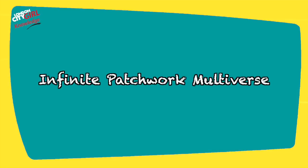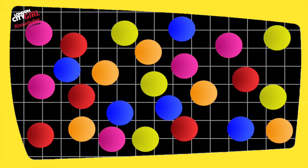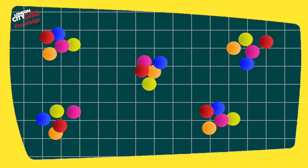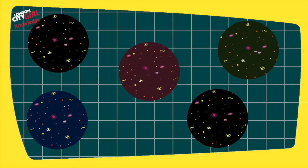Infinite patchwork multiverse. This theory imagines an infinite space-time which stretches on forever and where the elementary particles are arranged in every possible way. This means that every single possible universe that can be created is created.